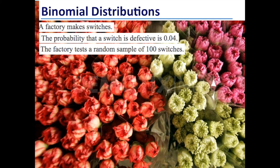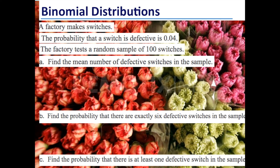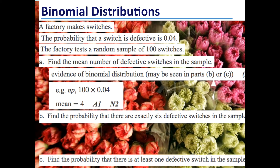Final exam question: a factory makes switches. The probability that a switch is defective is 0.04. The factory tests a random sample of 100 switches. Find the mean number of defective switches in the sample. For the expected value of a binomial distribution, we multiply the number of trials by the probability of success: 100 times 0.04 gives a mean of four. For exactly six defective switches, that's 100 choose six times 0.04 to the power of six times 0.96 to the power of 94, which gives 0.105 — using binomial PDF on the calculator.